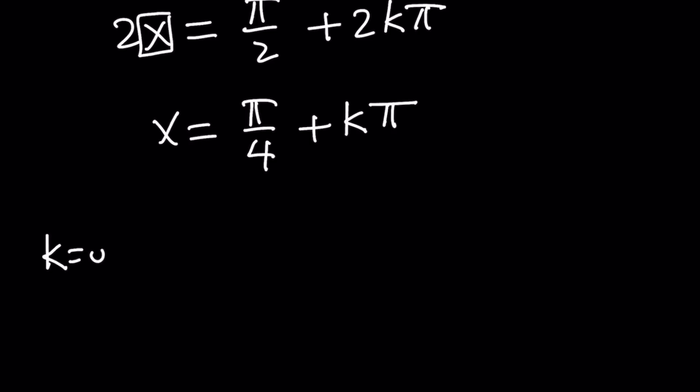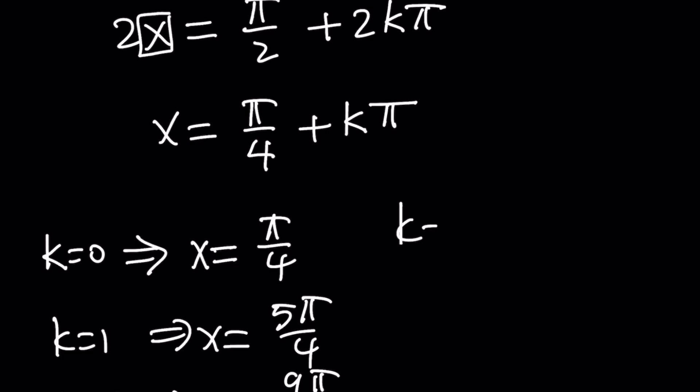Now k is an integer positive and negative, so let's replace k with some values. If k is 0, x is going to be pi over 4. If k is 1, x equals 5 pi over 4. If k is 2, then x is 9 pi over 4.